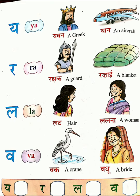Then letter LAA, L-A. 'Lut', L-U-T — hair, H-A-I-R. Then 'lalana', L-A-L-A-N-A — a woman, W-O-M-A-N.